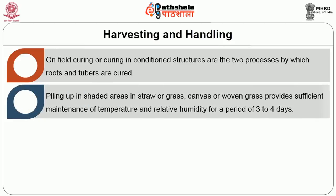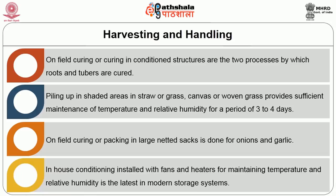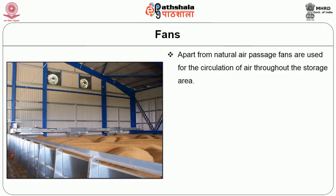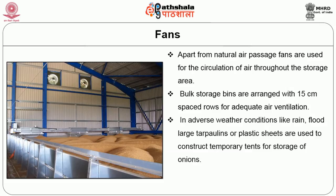Piling up in shaded areas, in straw, grass, canvas or woven grass provides sufficient maintenance of temperature and relative humidity for a period of 3-4 days. On-field curing or packing in large netted sacks is done for onions and garlic. In-house conditioning installed with fans or heaters for maintaining the temperature and relative humidity is the latest in modern storage systems. Fans are also used apart from natural air passage in circulation of air throughout the storage area. In adverse weather conditions like rain and flood, large tarpaulins or plastic sheets are used to construct temporary tents for storage of onions.